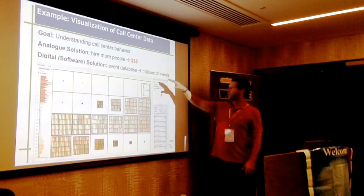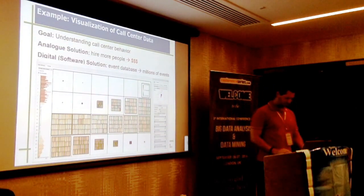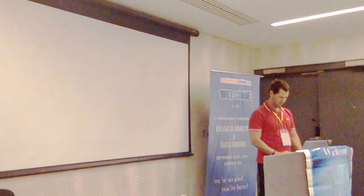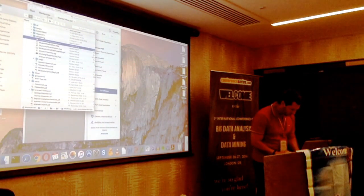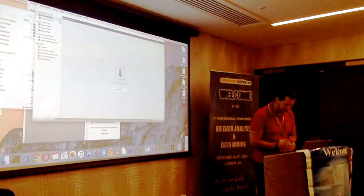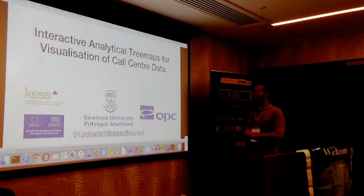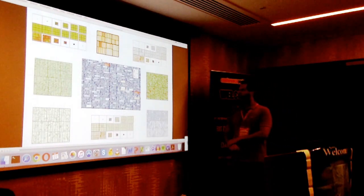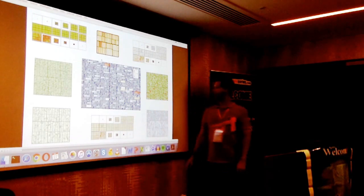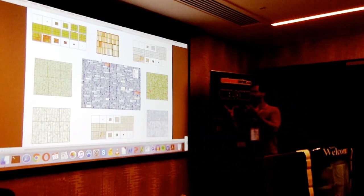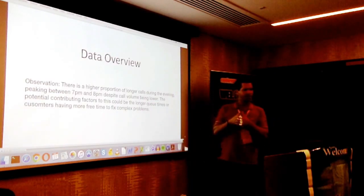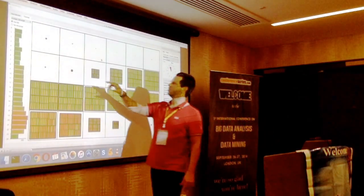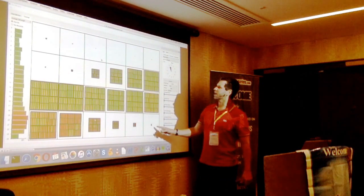So how do we take the chaos of call center data and visualize it to make sense of it? We use something called a tree map as one way to visualize the call center data. The tree map is a hierarchical data structure that lets us start with an overview and then zoom in to different levels of detail. The size of the rectangles is mapped to call volume, showing different hours from midnight to midnight.